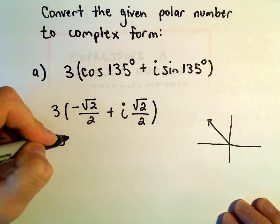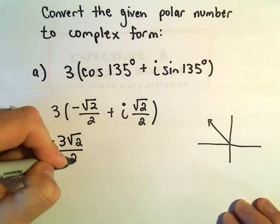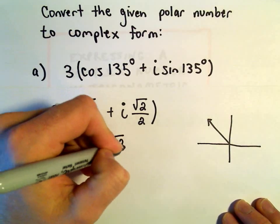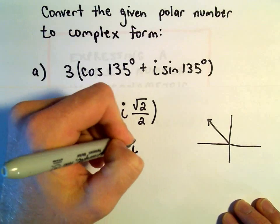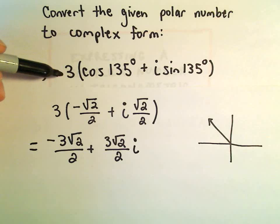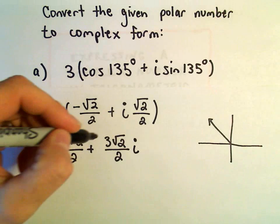so we'll get negative 3 root 2 over 2, plus 3 root 2 over 2. I'm going to stick my i out to the right side. And now we've taken our number that was in our polar number and put it in complex form.